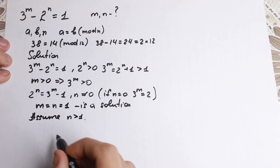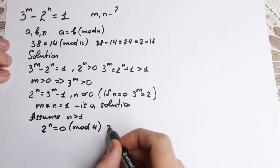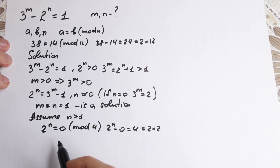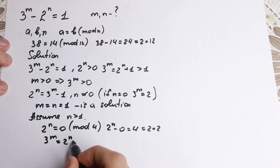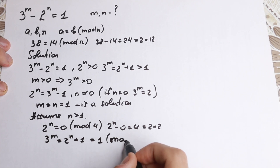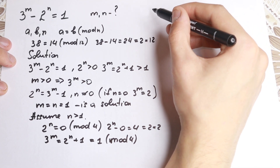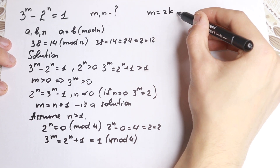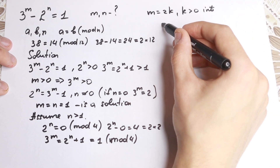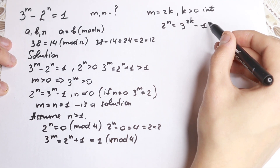If n is greater than 1, then 2 to the n equals 0 modulo 4, because 2 to the n minus 0 equals 4, or it can be written as 2 times 2. From here we have that 3 to the power m equals 2 to the power n plus 1, which is equal to 1 modulo 4. So m must equal 2k, where k is a positive integer. Now we have 2 to the n equals 3 to the power 2k minus 1. Let's factor it, because we can write it as a difference of squares.